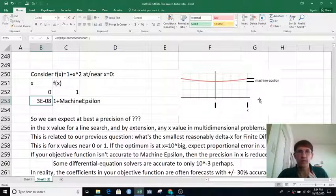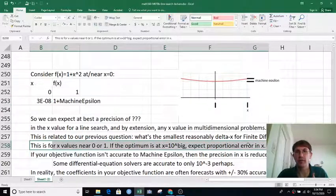This is for x values that are near zero or one. If our optimum x value was like a billion, which is nine zeros, then we would multiply this by a billion to get the reasonable precision out at that range. So that's if your x values are large.